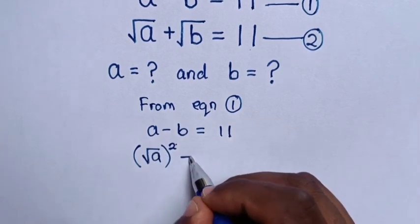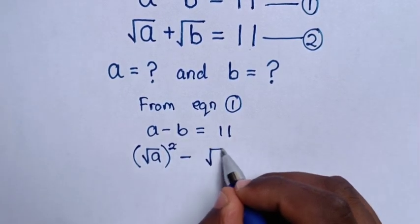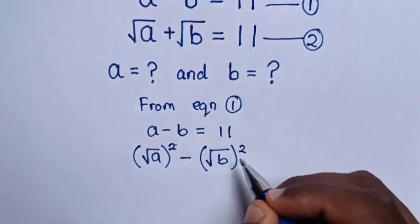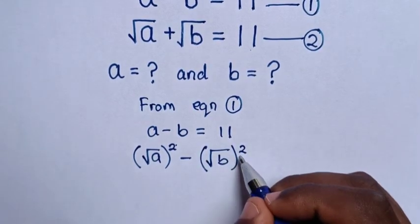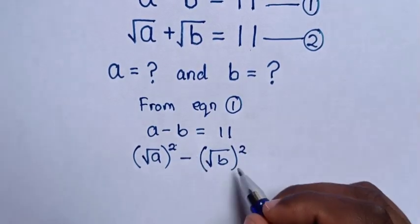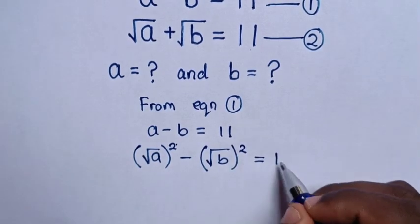Similarly, minus b is the same as minus square root of b, squared, because the square root cancels with the square to give b. So the expression equals 11.